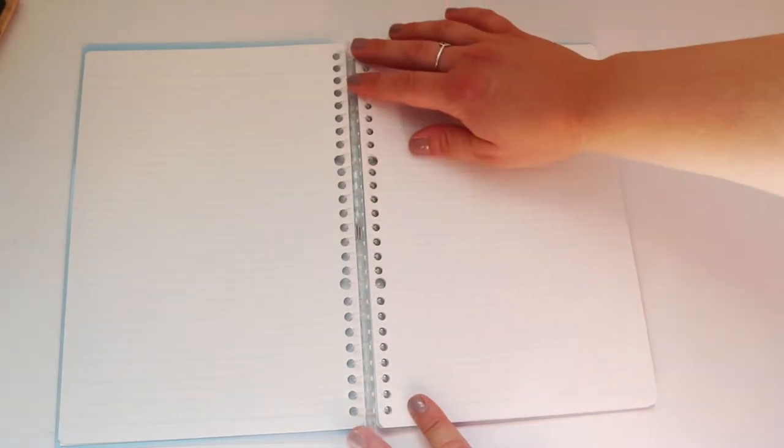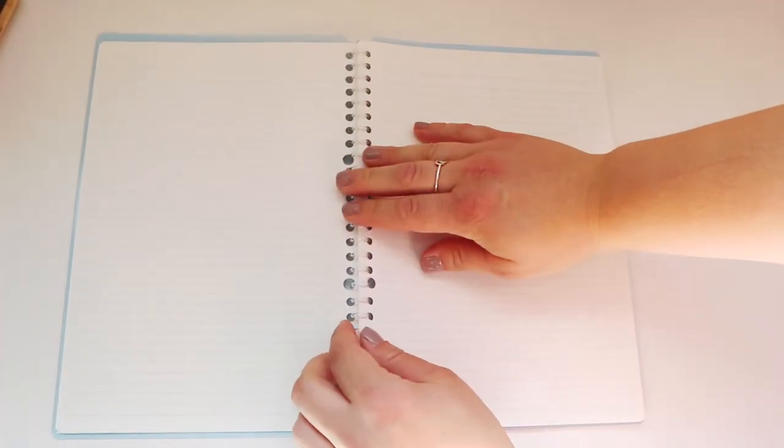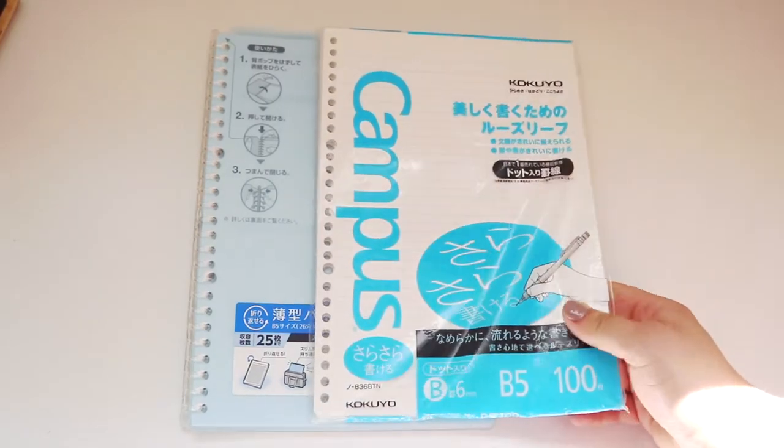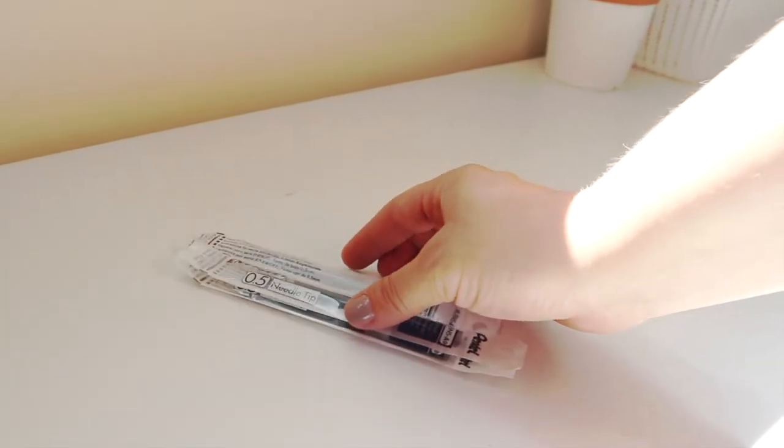This notebook is more similar to a binder since its rings open up. And to go with this notebook, I bought some refill sheets. So, enough about notebooks and onto pens.